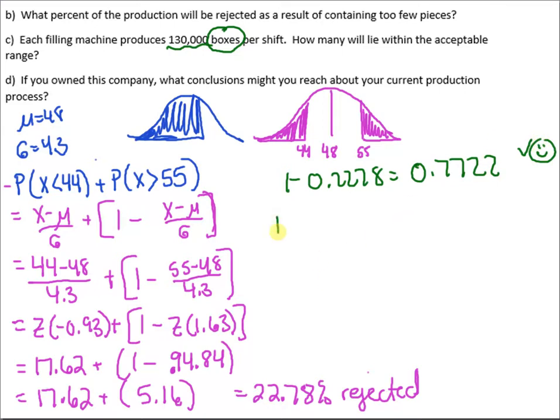That means out of 130,000 boxes, we're going to take 77.22% of them. 130,000 times 0.7722.